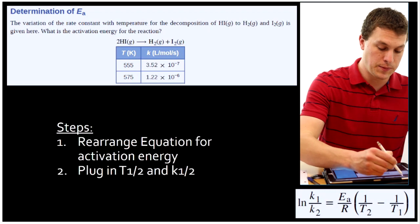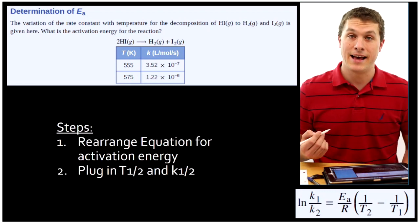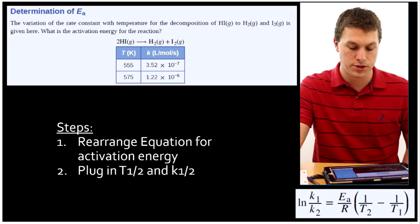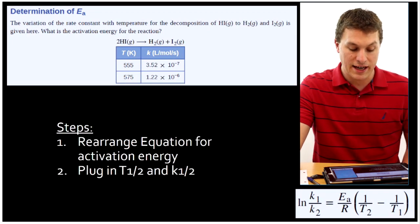The problem we're going to solve here is basically you've been given the rate constant at two temperatures and asked to solve for the activation energy. And that's what this says here. It says the variation of the rate constant with temperature for the decomposition of hydrogen iodide to hydrogen and iodide gas is given here. What's the activation energy for the reaction?